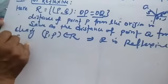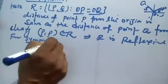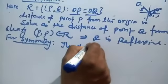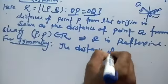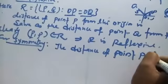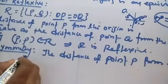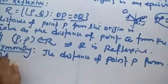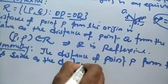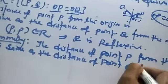For symmetry: if the distance of point P from the origin is the same as the distance of point Q from the origin, then the distance of point Q from the origin is the same as the distance of point P from the origin. So R is symmetric.